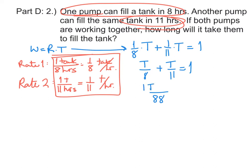The common denominator for these two fractions will be 88, meaning the first t needs to be multiplied by 11, and the second t needs to be multiplied by 8. So 19t over 88 is equal to 1.